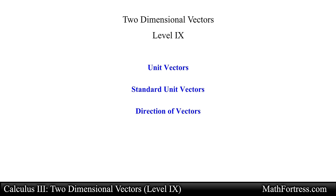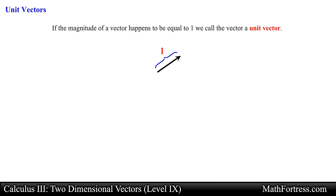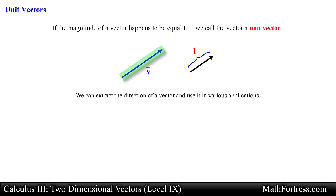Let's first talk about unit vectors. If the magnitude of a vector happens to be equal to 1, we call the vector a unit vector. These vectors are going to be extremely useful as we cover more complicated concepts associated with multivariable calculus. In many applications involving vectors, it is very useful to find a unit vector that has the same direction as a given vector. This way we can extract the direction of a vector and use it in various applications.